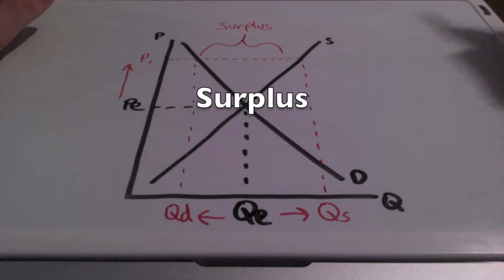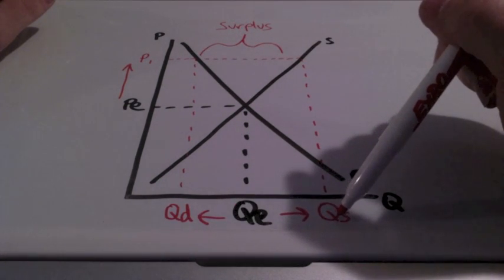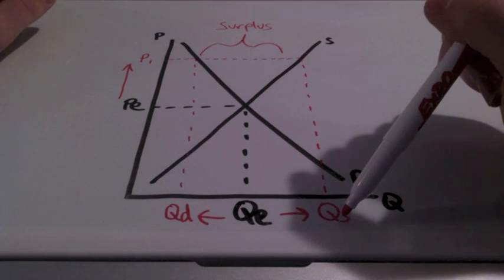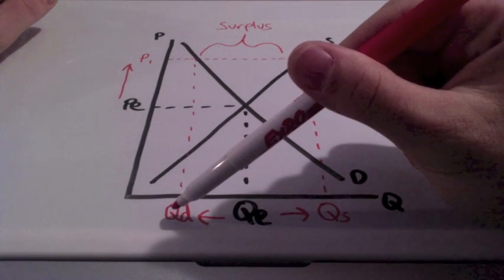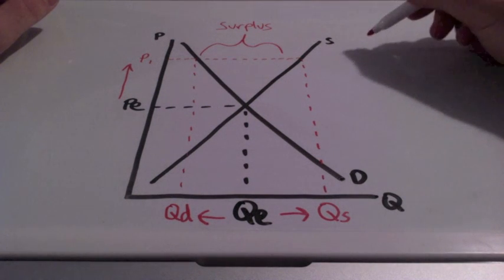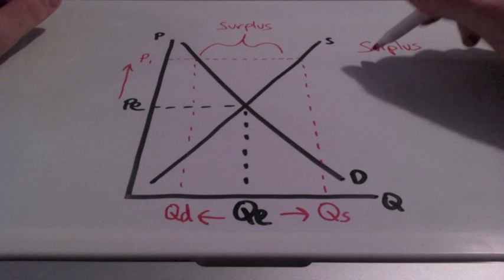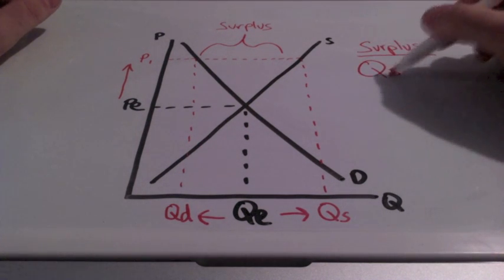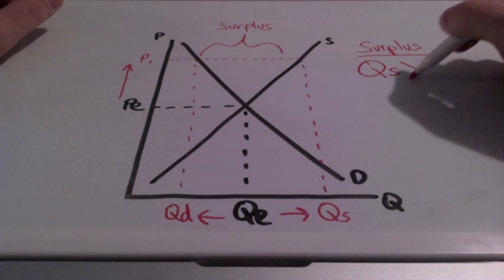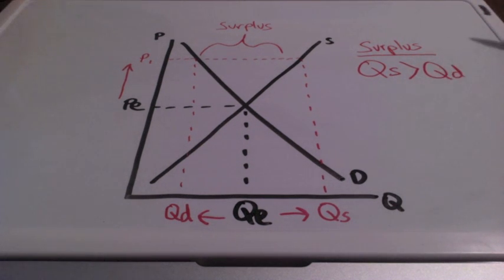A surplus is basically telling us that the quantity made, meaning the quantity supplied, is larger than what people want, what people demand. So a surplus is when quantity supplied is greater than quantity demanded.